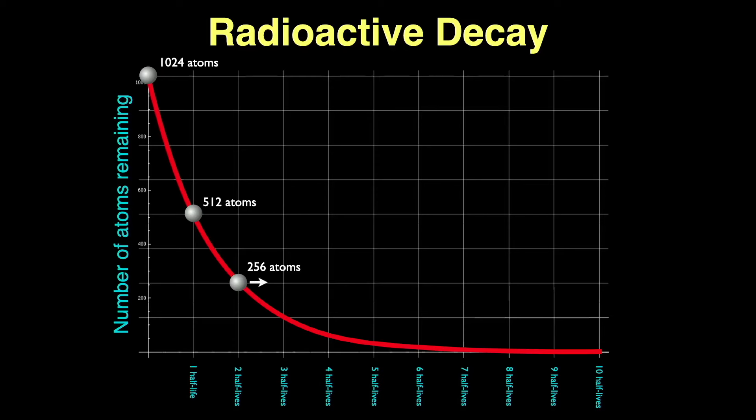Another half-life? Half again as many, or 128 atoms, and so on. Just keep dividing by two every half-life. After 10 half-lives, we'll have about 1,000th of our original amount. By the way, notice there's one remaining atom after 10 half-lives. If we waited one more half-life, our remaining atom would have a 50-50 chance of decaying in that time.